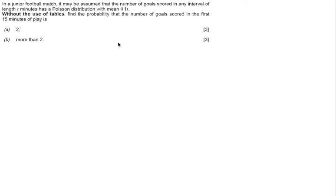We're told that in a junior football match, it may be assumed the number of goals scored in any interval of length t minutes has a Poisson distribution with mean 0.1t. Without the use of tables, find the probability that the number of goals scored in the first 15 minutes of play is: a) 2, or b) more than 2.